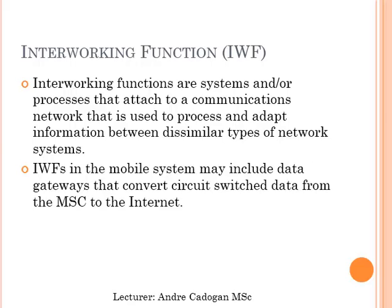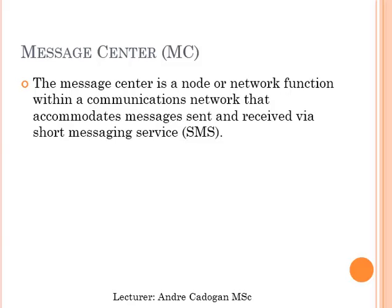There are internetworking functions — systems attached to a communication network used to process and adapt information between similar types of network systems. For example, the MSC connected to the internet, demonstrating the difference between the radio access network and so on. Internet working functions in a mobile system may include data gateways such as the internet connected to the mobile switching center. There is also messaging control — we will speak about short messaging services, SMS — a node or network function within a communication network that accommodates messages being sent and received.